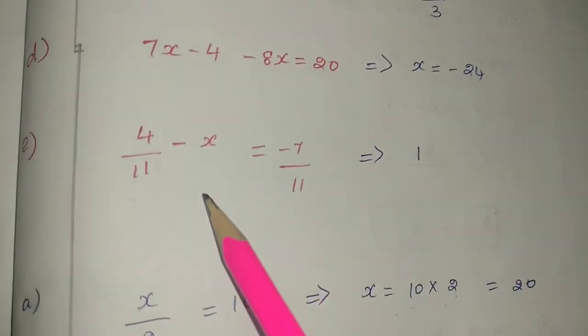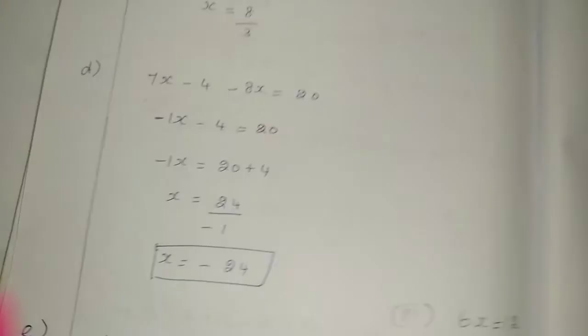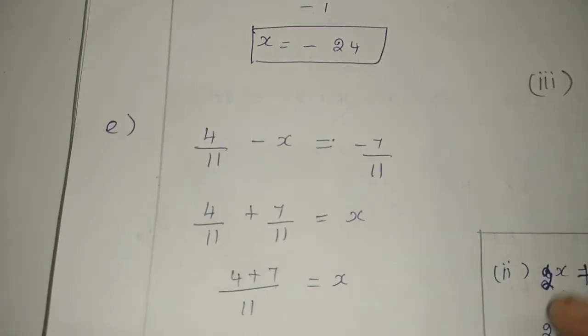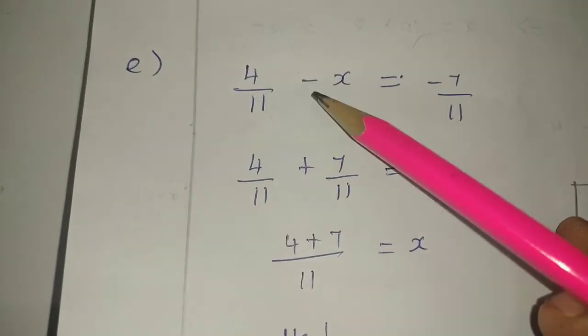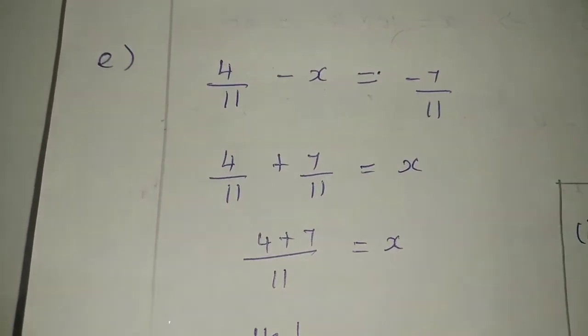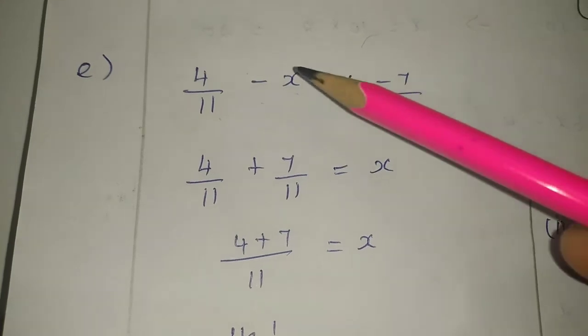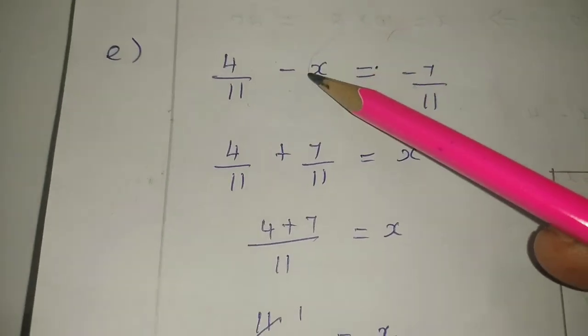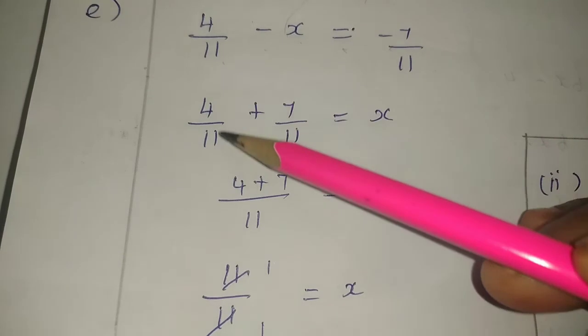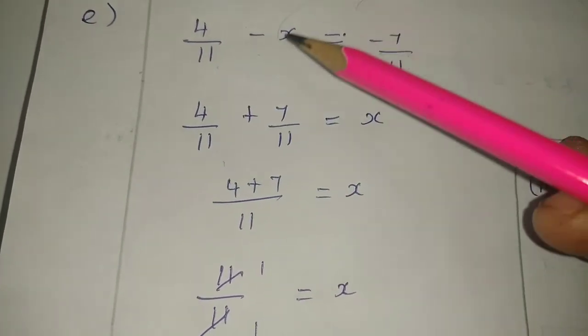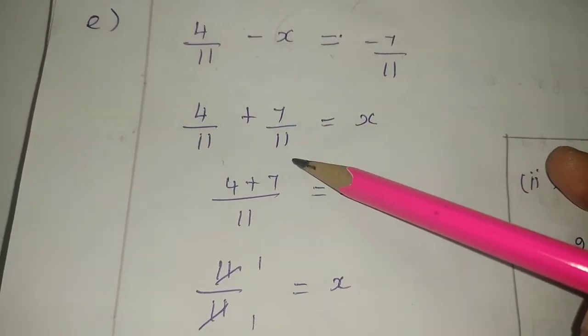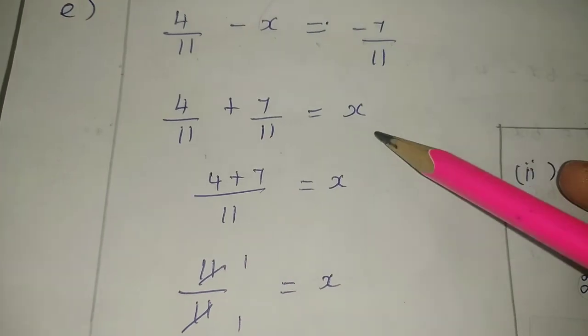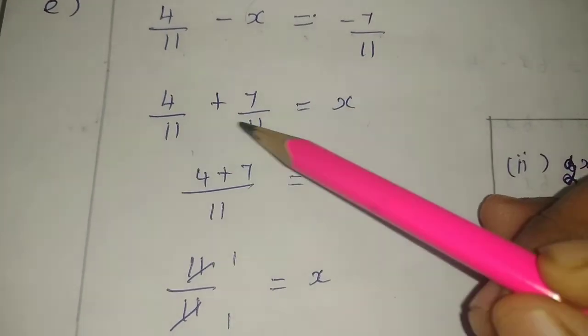Now let's look at the last one, e: 4 by 11 minus x equals minus 7 by 11. What do we do? x transposes, and the constant transposes. Minus x becomes plus x. The two denominators are the same.